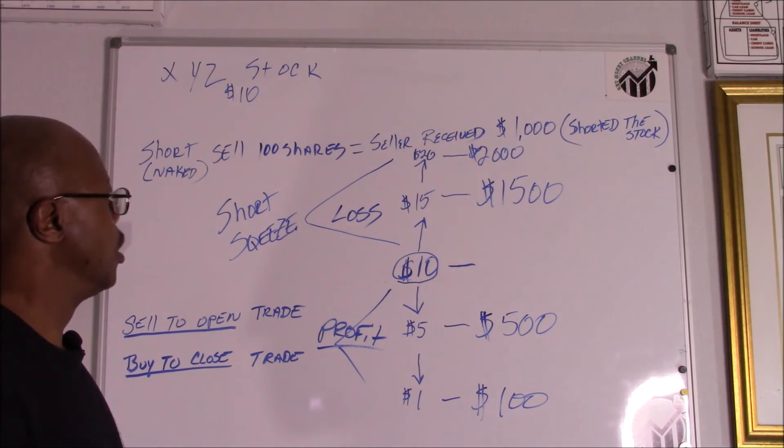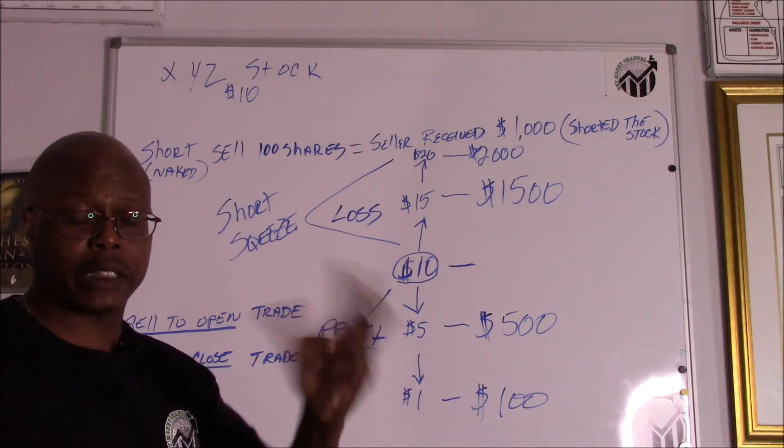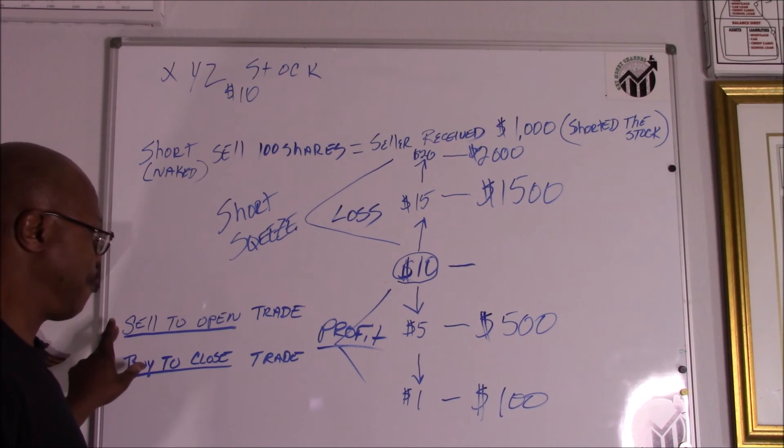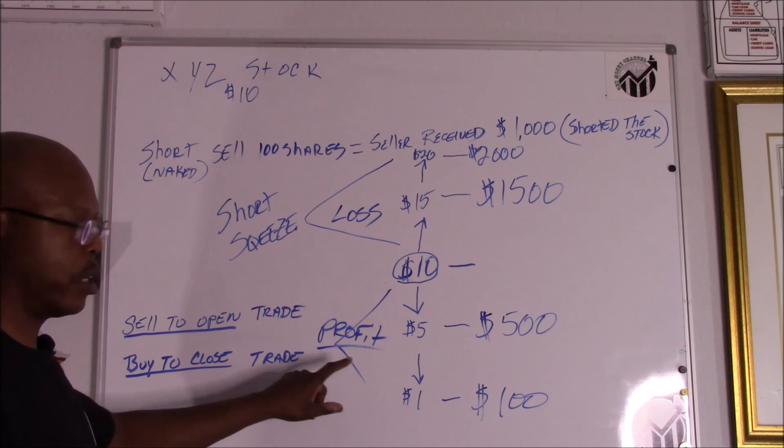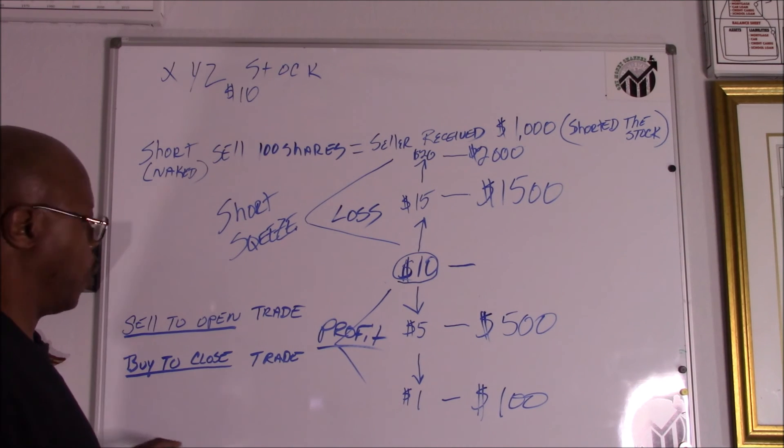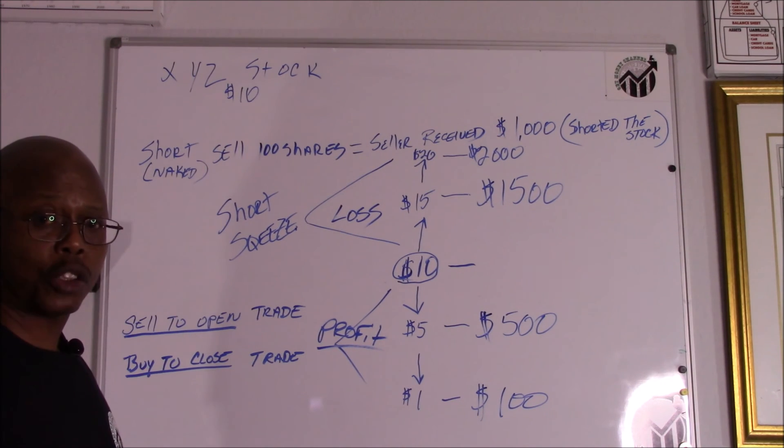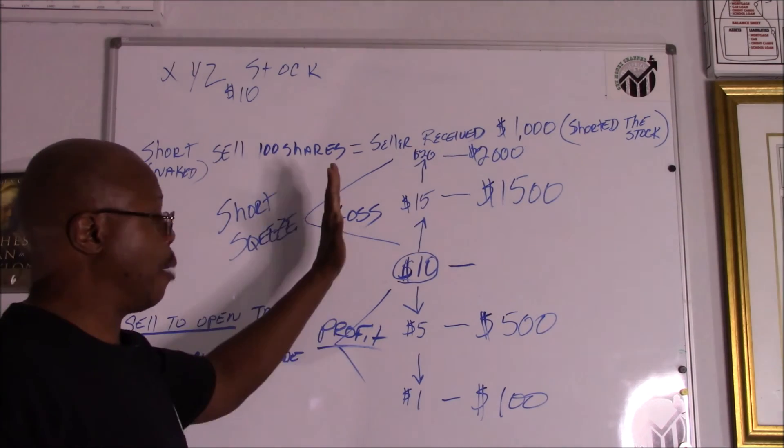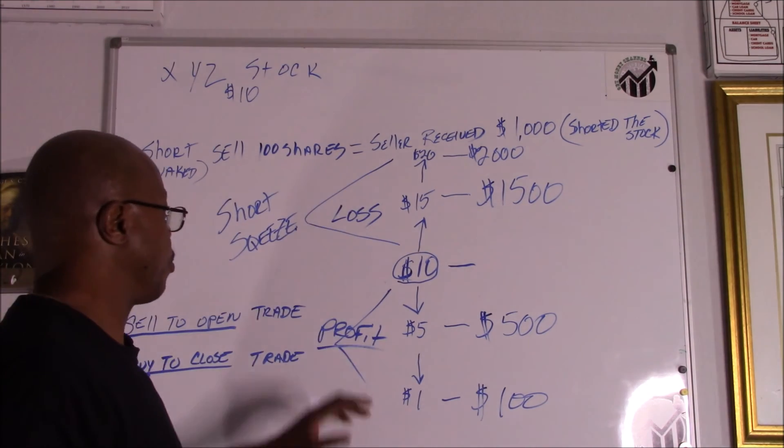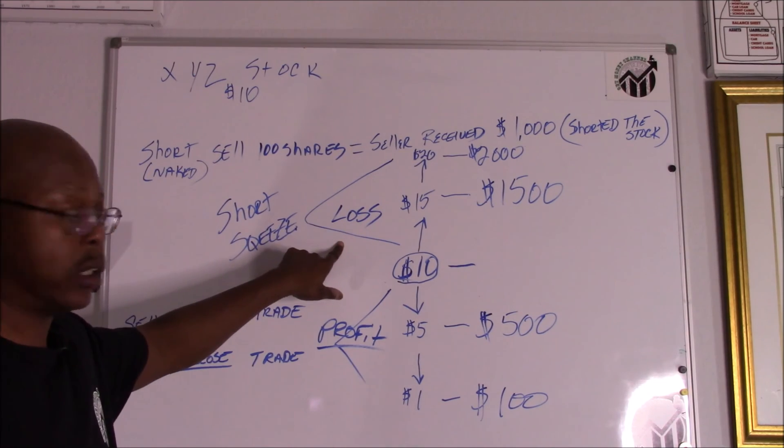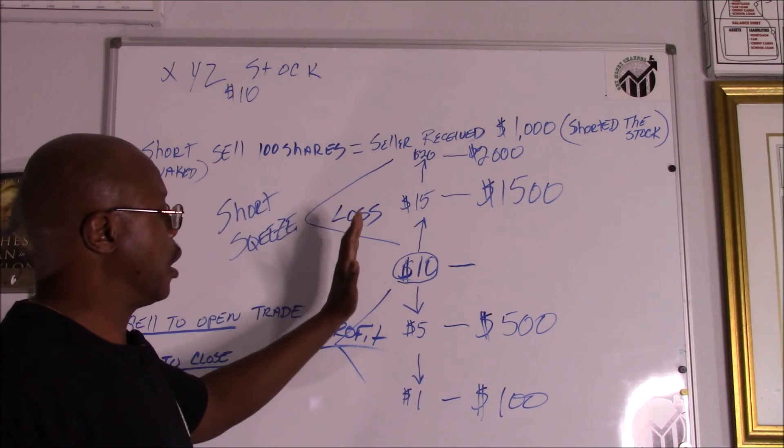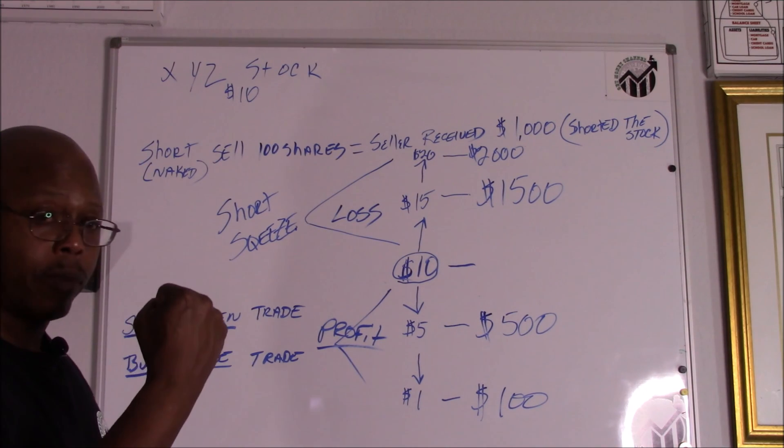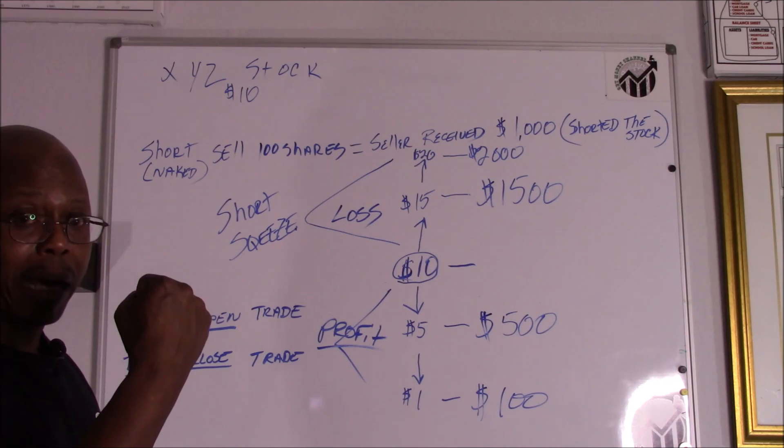So when you're short selling, you do it just the opposite of buying a stock. You're selling the stock that you don't own, receiving the profits from that. If it goes down it's going to be profitable. In order to close out, in order to get out of this trade, they got to buy it back. If it goes up, if it goes the opposite way, that is considered a loss. And the further it goes from that $10, the more pressure on that seller to go ahead and buy it to close out that position. That there is called a short squeeze.